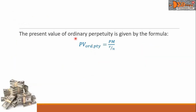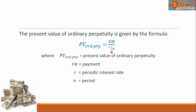The present value of ordinary perpetuity is given by this formula: PV of ordinary perpetuity equals a fraction where the numerator is PM, all over another fraction R over N. PV means present value of ordinary perpetuity, PM means payment, R means the periodic interest rate, and N is the period.